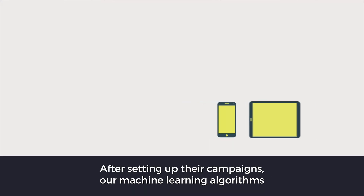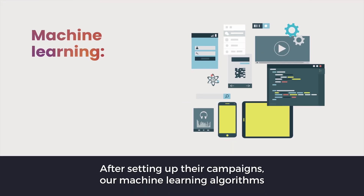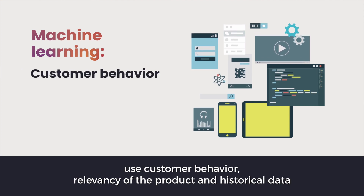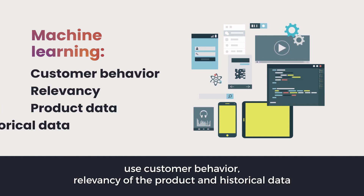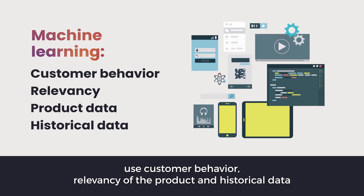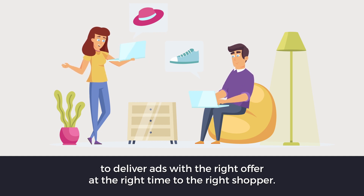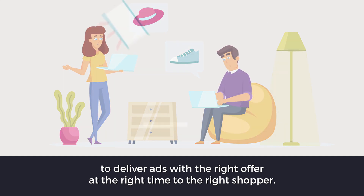After setting up their campaigns, our machine learning algorithms use customer behavior, relevancy of the product, and historical data to deliver ads with the right offer at the right time to the right shopper.